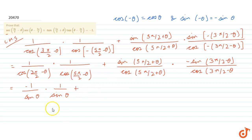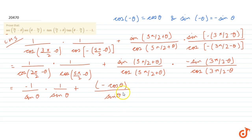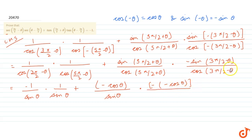sin(π/2 + θ) equals -cos θ, and cos(π/2 + θ) equals sin θ. Also, sin(3π/2 - θ) equals -cos θ, and cos(3π/2 - θ) equals -sin θ. Substituting these values and simplifying the terms we get the expression in terms of sin θ and cos θ.